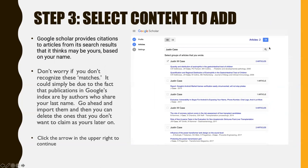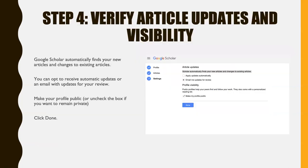Next, click on the arrow in the upper right. Step four is to verify your article updates and visibility. These are options that are available to you. Google Scholar automatically finds your new articles and changes to existing articles. You can opt to receive automatic updates or an email with updates for your review. You can also make your profile public, or uncheck the box if you want it to remain private. Then click Done.